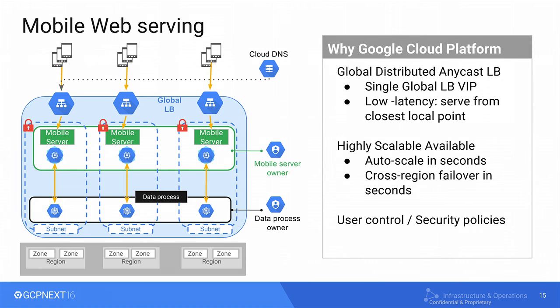We've talked about a lot of the capabilities of load balancing, but it's important: the global scope, a single VIP serving globally without DNS tricks, and the scalability, autoscaling, and performance that comes along with that.